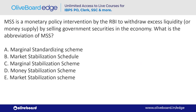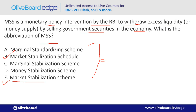MSS is a monetary policy intervention by the RBI to withdraw excess liquidity by selling government securities in the economy. It is an instrument that RBI uses to control excess liquidity. The full form of MSS is Market Stabilization Scheme — option E. The market is stabilized to control excess liquidity.